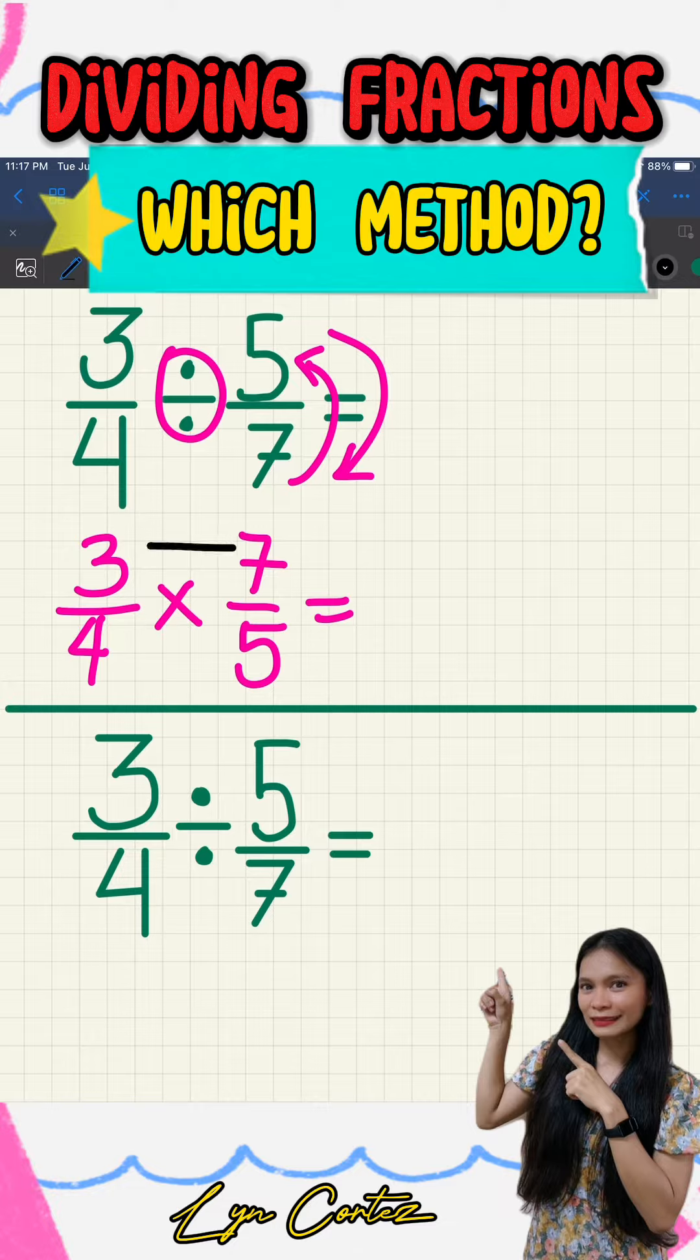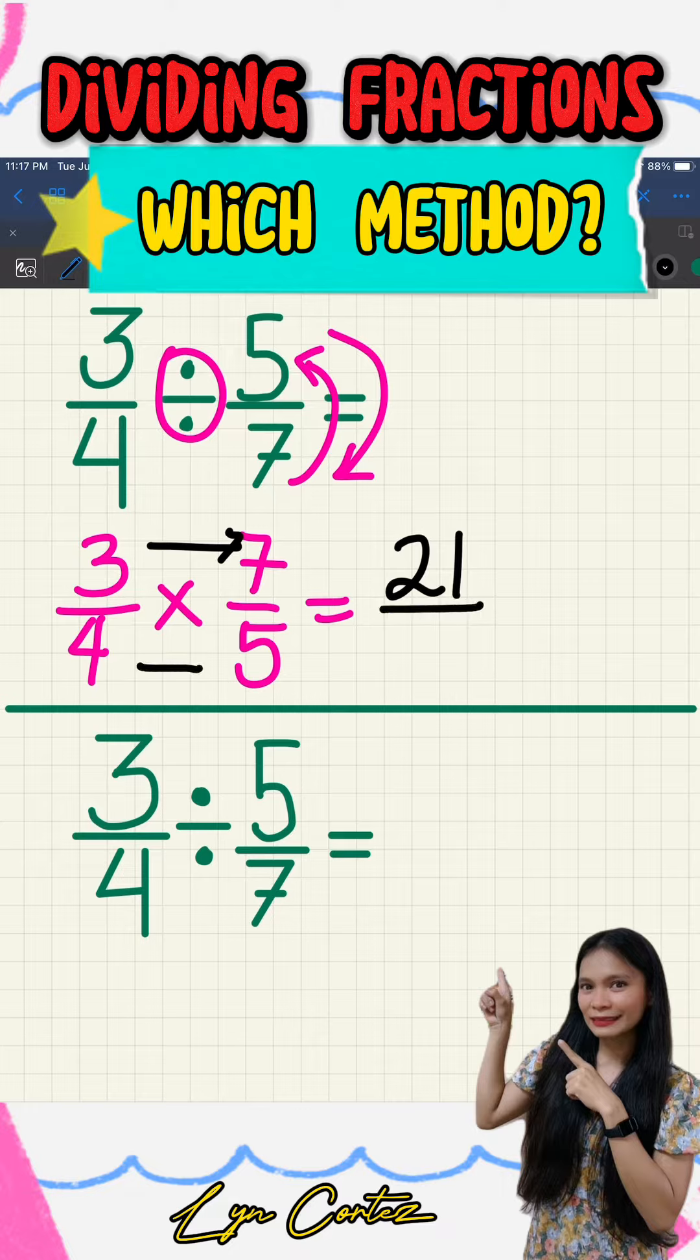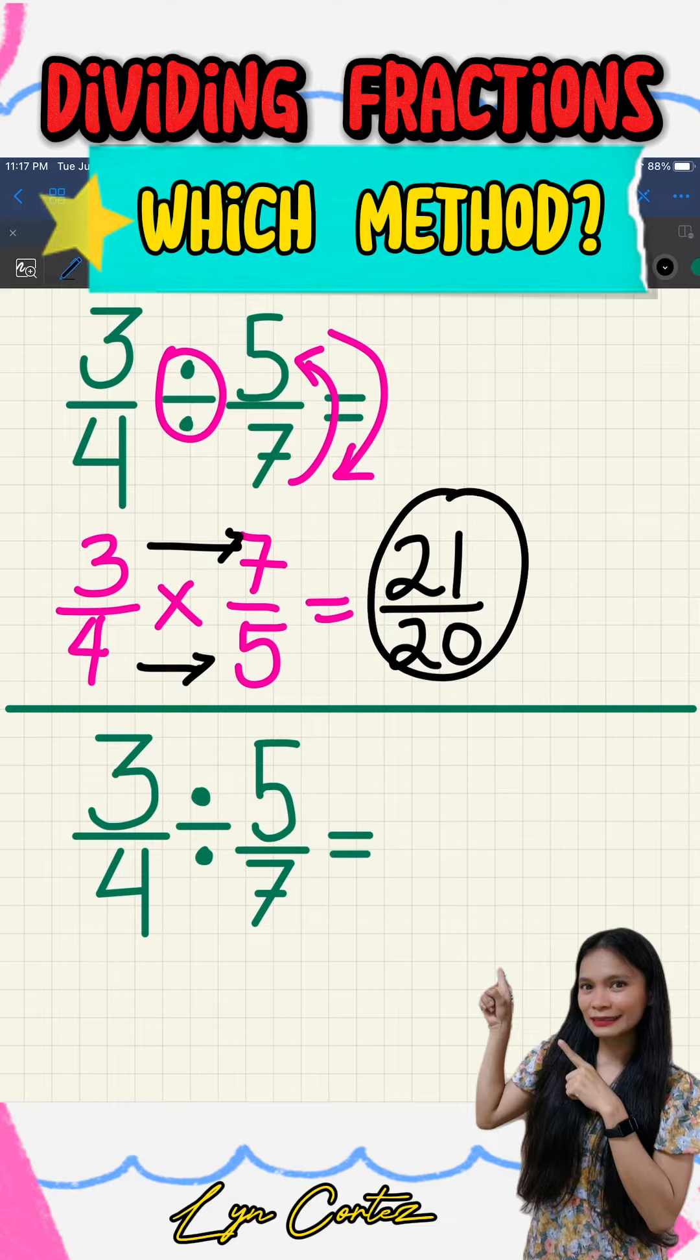Then after that, we'll get the product of the numerators. So 7 times 3 or 3 times 7 is 21. Then multiply the denominators as well. We have 4 times 5 is 20. That's the answer. We can either simplify this or change it to a mixed number.